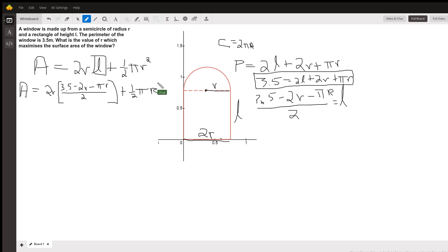And before I start taking a derivative, I see that these cancel out, and I might want to distribute this R. So 3.5R minus 2R minus 2R², minus πR², plus ½πR². There is a formula for the area of that window, depending strictly on R.